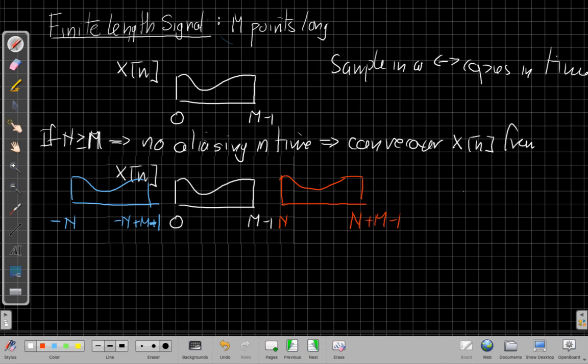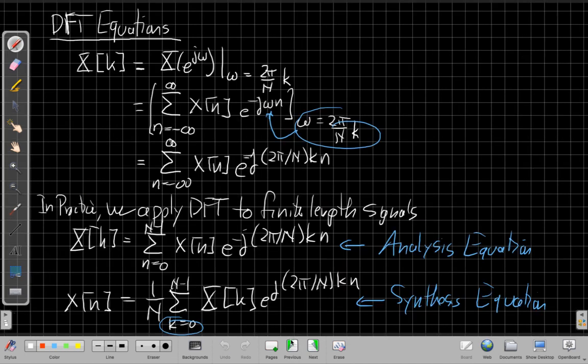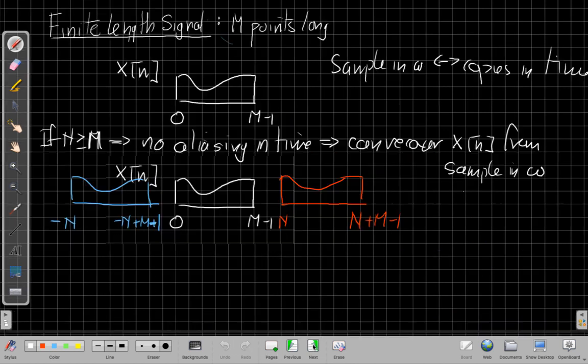So we can recover x of n from the samples in frequency. So if I took the samples I had in omega and put them on the previous page into this equation for x of k, I would be able to get back the original signal without anything going wrong.